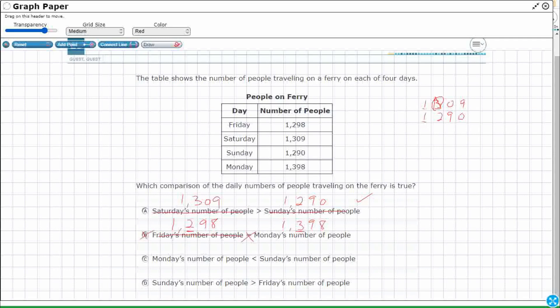Let's check C. Monday's number of people 1,398 is less than Sunday's number 1,290. Alright let's come over here again, 1,398 and 1,290. So once again the thousands digit is the same.